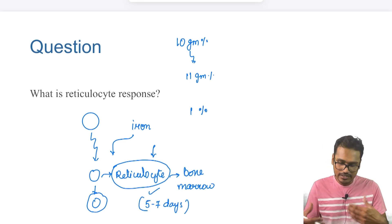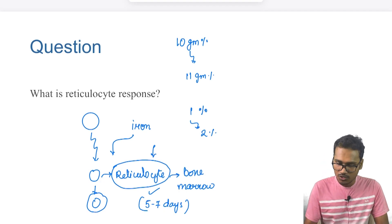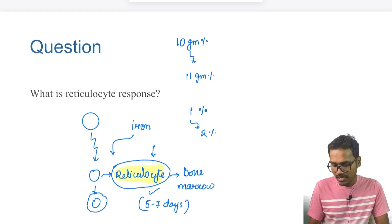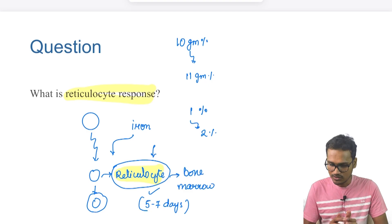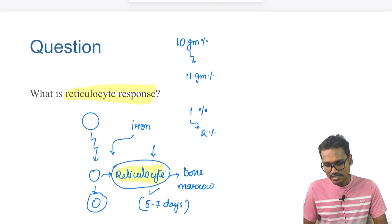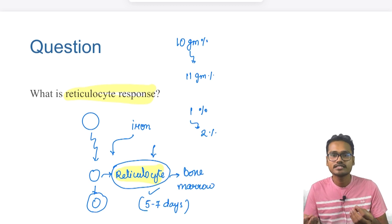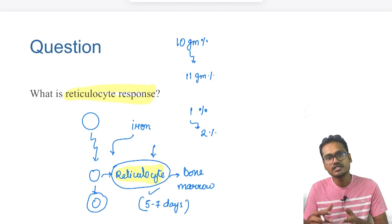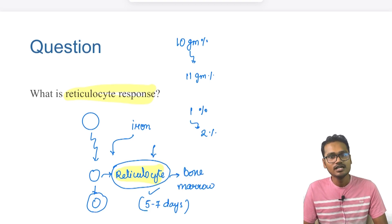The reticulocyte count increases within five to seven days of starting therapy — faster than hemoglobin changes. If the reticulocyte count increases from, say, 1% to 1.5–2%, it means the therapy is working and you are going in the right direction. This helps assess treatment progress early. Additional questions in problem-based exams may ask about stages of erythropoiesis or other blood picture parameters. These are the sample questions discussed. I hope it's helpful — thank you for watching, we'll see you in the next video.